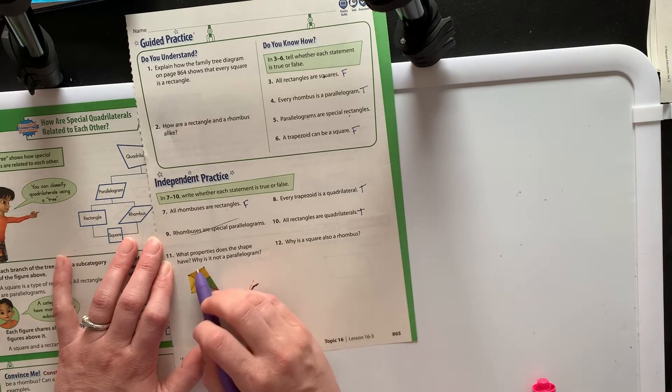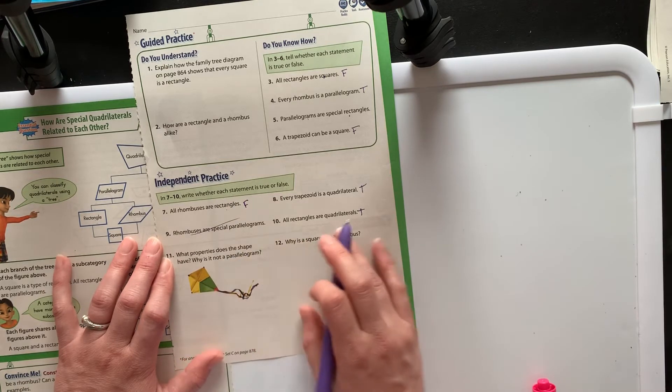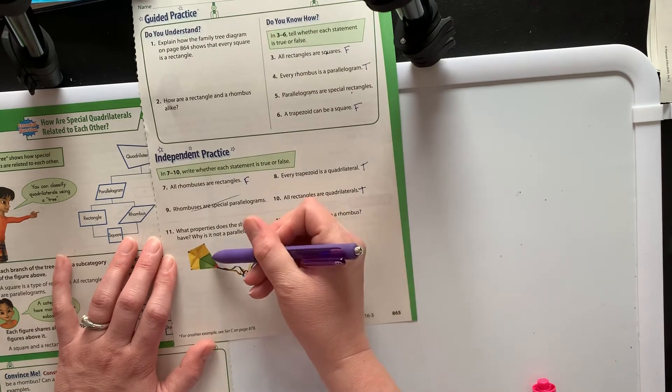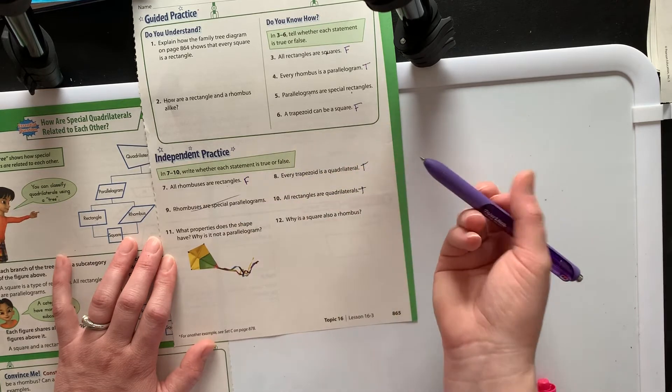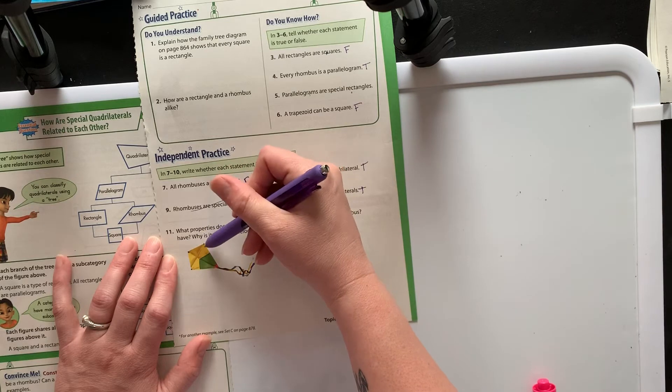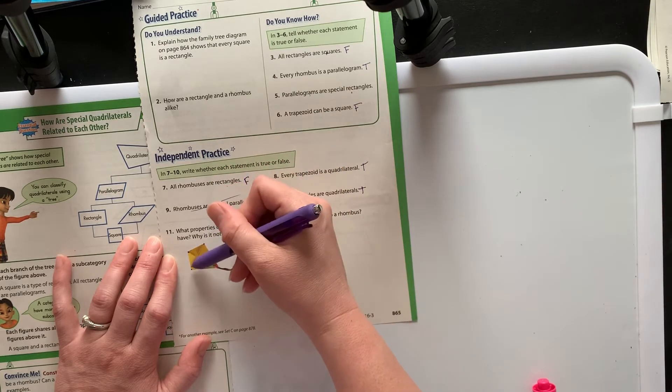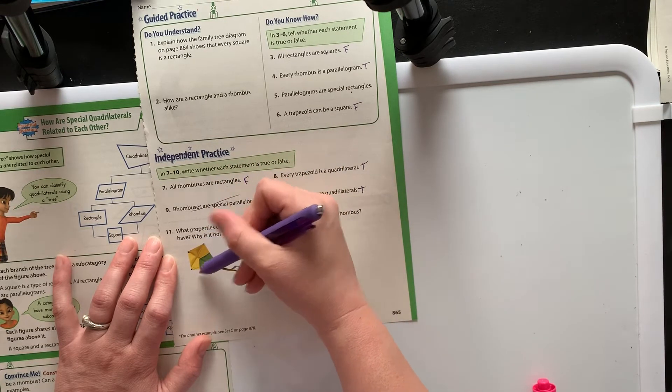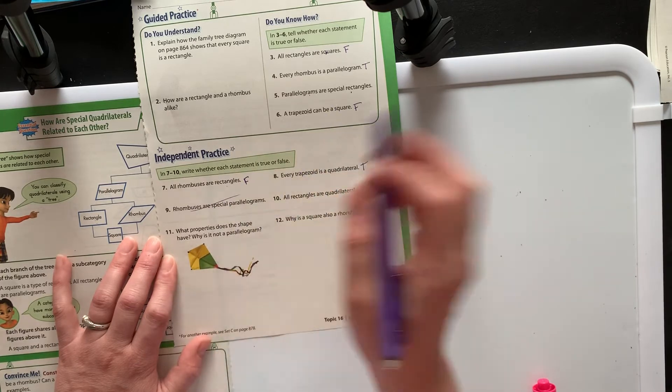What properties does the shape have? Why is this not a parallelogram? Well, it's got one, two, three, four sides, so it's a quadrilateral, but it's not a parallelogram because it has no parallel sides. Like this side is not parallel to this side. This side is not parallel to this side. There's no parallels. So that's why it's not a parallelogram.